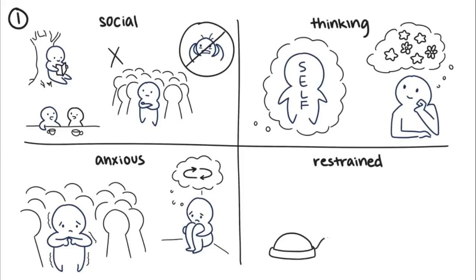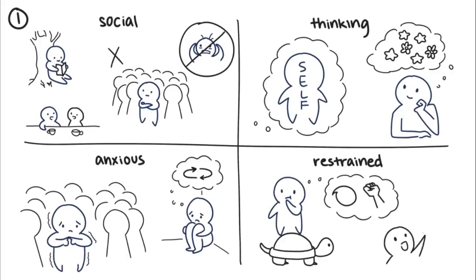Lastly, restrained introverts function on a slower pace and prefer to think before they speak or act. They're also known for being reserved. They like to take their time, preventing impulse from affecting their decision-making.